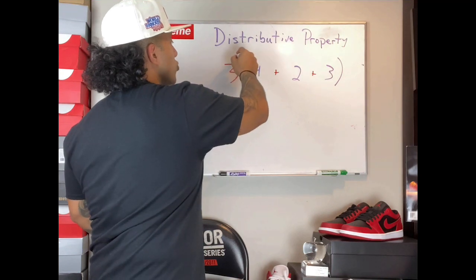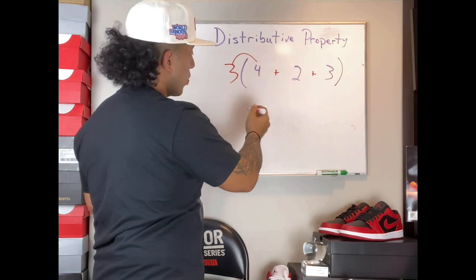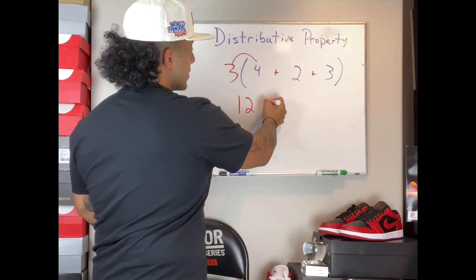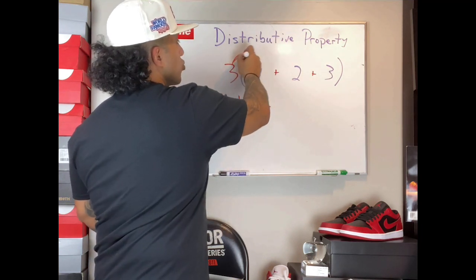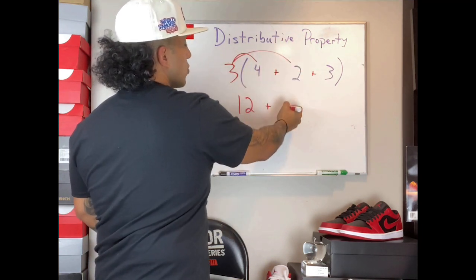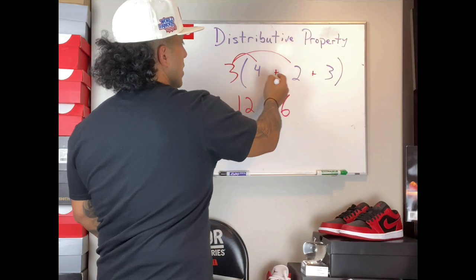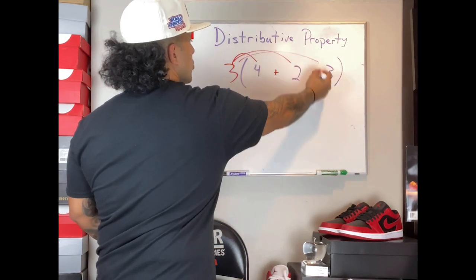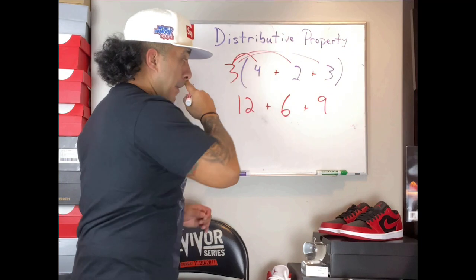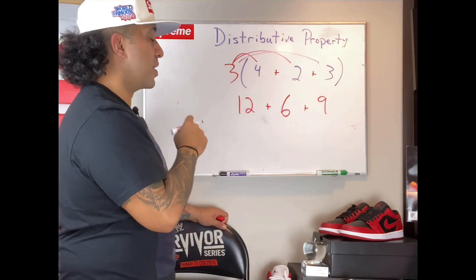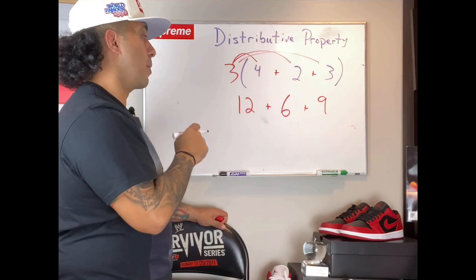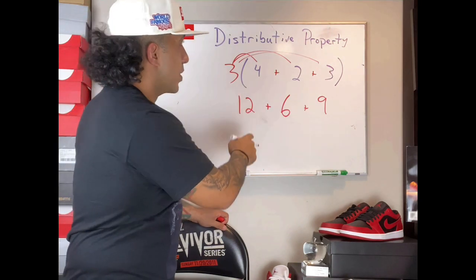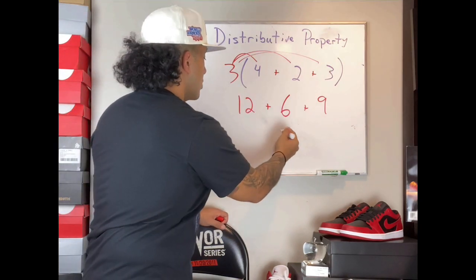One at a time: we're going to do three times four — three times four is 12. We're going to keep that addition sign and go three times two, which gives us six. Bring down that other addition sign and we're going to go three times three, which is nine. We're then going to add 12 plus six plus nine. 12 plus six is 18, and 18 plus nine is 27.